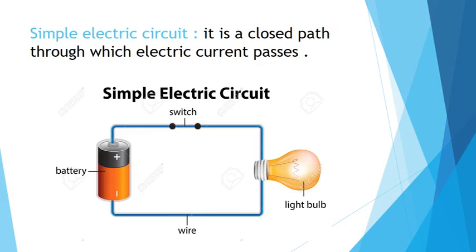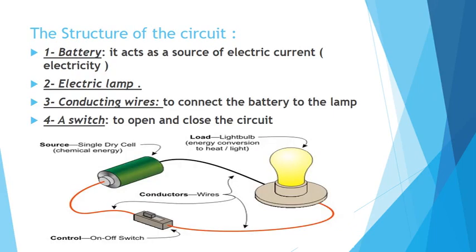Now let's take a deeper look at the structure or the components of the electric circuit. We have a battery, which is the source of electricity or the source of electric current. We have an electric lamp or a light bulb. We have conducting wires that conduct electricity, connecting the battery to the lamp. And we have a switch to open and close the circuit to turn on or turn off the light. So: a battery, electric lamp, conducting wires, and a switch.